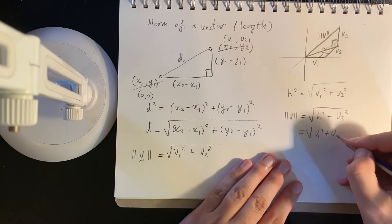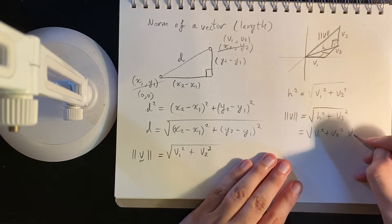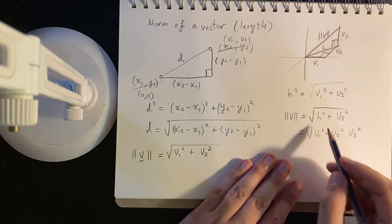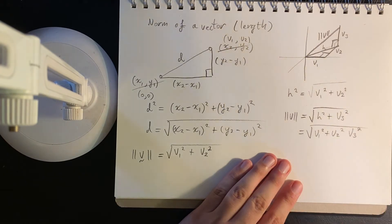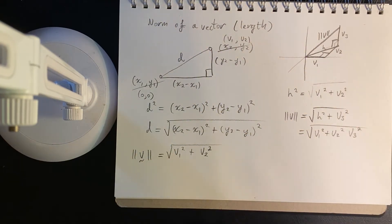So it's v1 squared, v2 squared, v3 squared. So my point is that the norm can extend to any number of dimensions that we want.